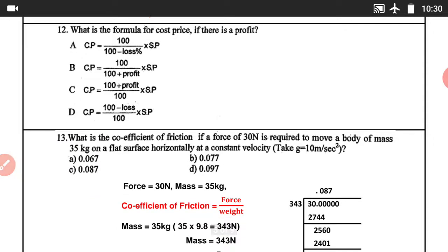Question number 12: What is the formula for cost price if there is profit? Cost price formula = 100 / (100 − Loss%) × Sold price. Answer A is correct.